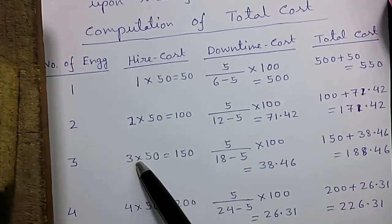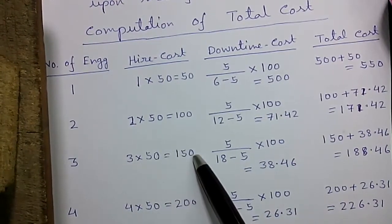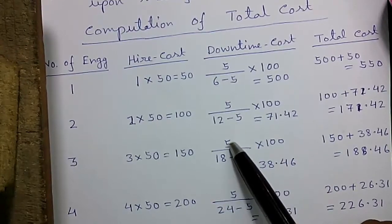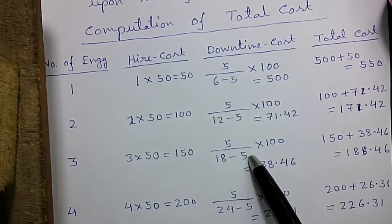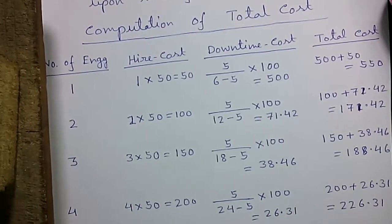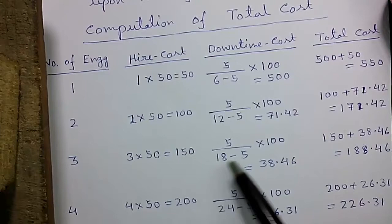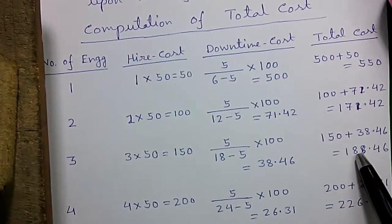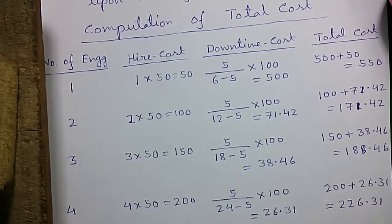Now for 3 engineers, the hire cost is 3 times 50, which is 150, and the downtime cost is 5 divided by 18 minus 5, times 100, which equals 38.46. So the total cost is 150 plus 38.46, that is 188.46.